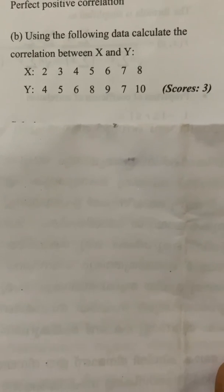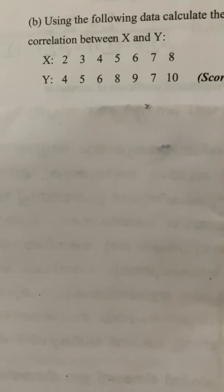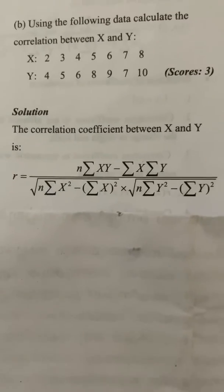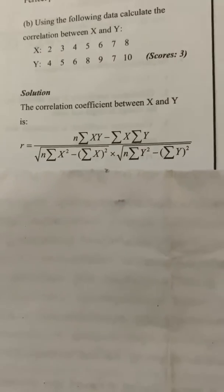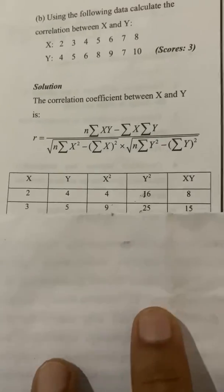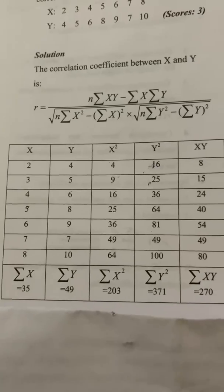The first question is: using the following data, calculate the correlation between x and y. We will look at the formula and create a table with columns for x, y, xy, x-squared, and y-squared, then substitute the totals into the formula.